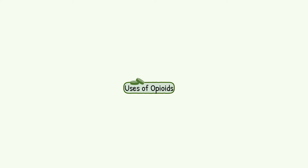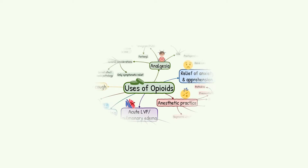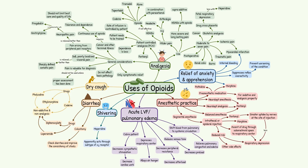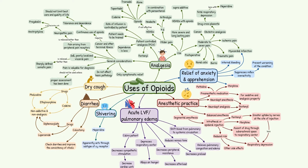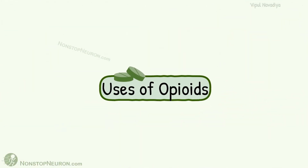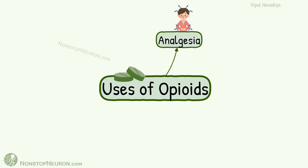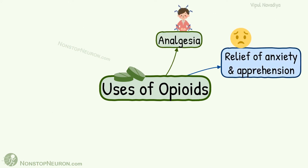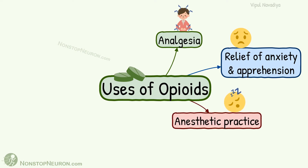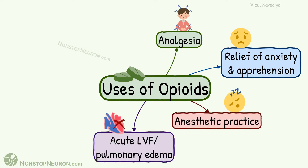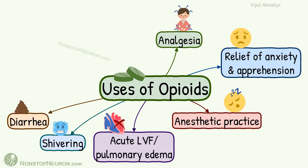Hello, in this video we will make this mind map of clinical uses of opioids. Let's get started. Broadly speaking, opioids are used in analgesia, for relief of anxiety and apprehension, during anesthesia, in acute left ventricular failure or pulmonary edema, shivering, diarrhea, and dry cough.